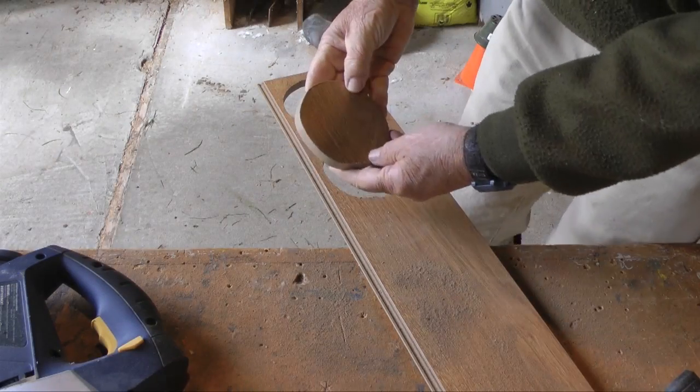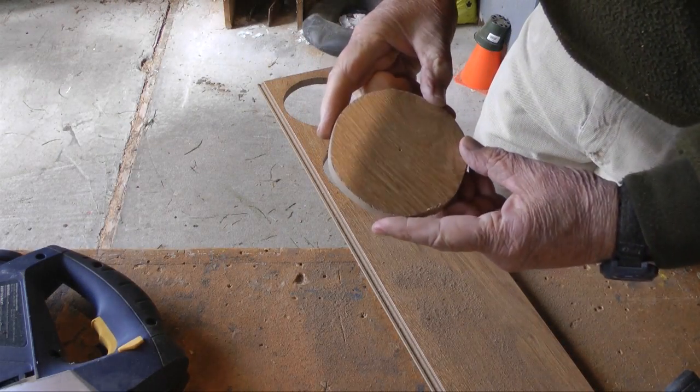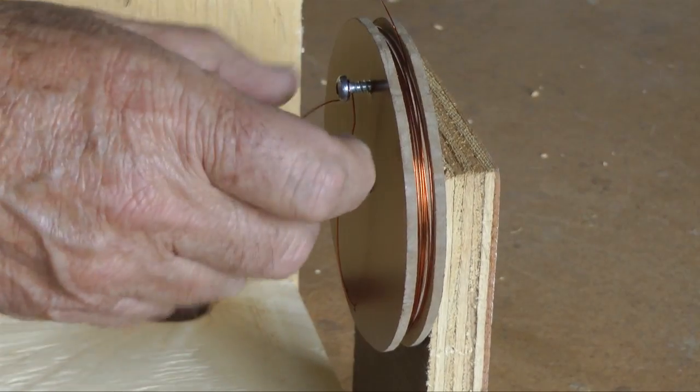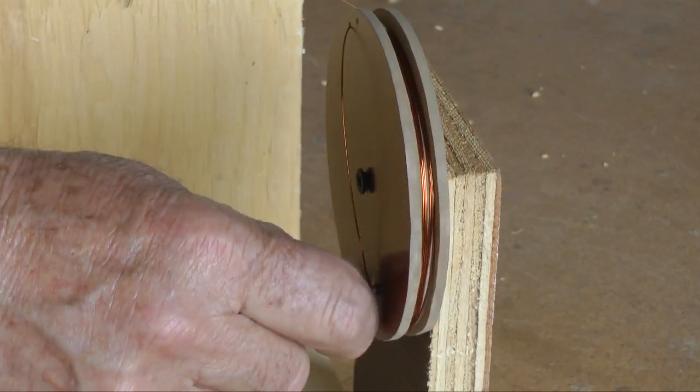I created a coil pair like this, cutting discs from laminate flooring and cutting a groove around the perimeter to hold the coil windings.